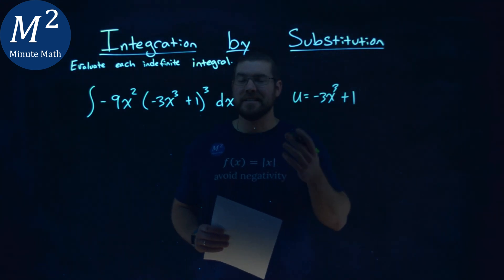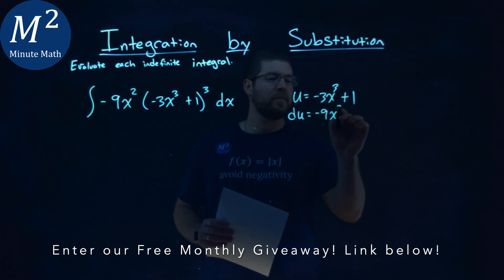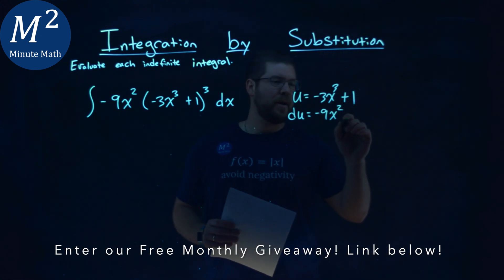And let's go find du now. du, derivative here, 3 comes down, negative 3 times 3 is negative 9x squared, and then derivative of a constant is just 0, don't worry about it, and we have dx.